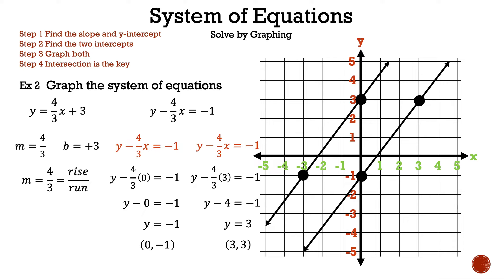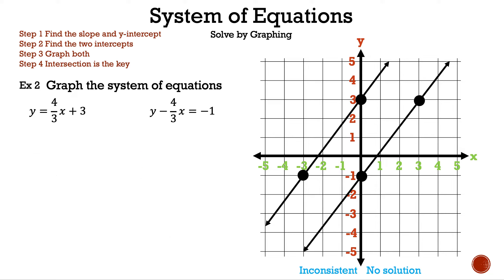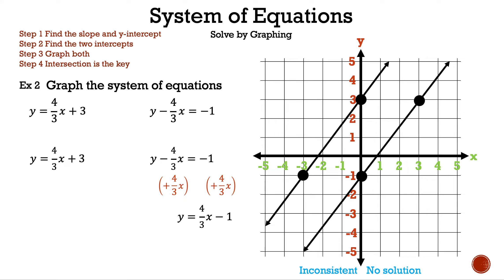Now that we've drawn both lines, we can determine the answer to the system by looking at how many times the two lines intersect. In this case, the two lines never intersect, because our two lines are parallel, or have the same slope. Our graph is inconsistent. Therefore, we have no solution. Let's check by solving for y in both equations. The first equation, y is equal to 4 thirds x plus 3, is already solved. For the second equation: adding 4 thirds x to both sides gives y is equal to 4 thirds x minus 1. Our slopes are the same, so our answer is correct. That is example 2.